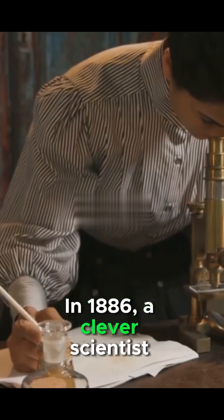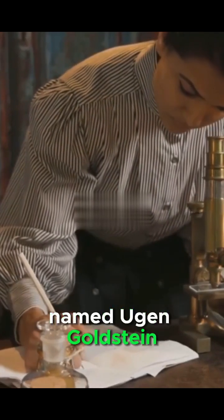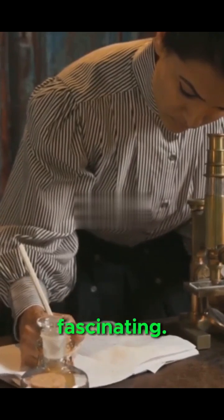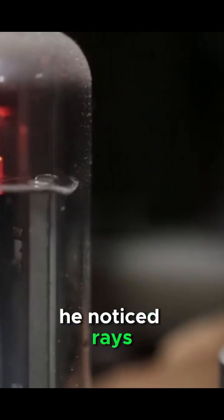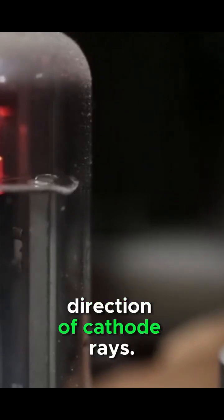In 1886, a clever scientist named Eugen Goldstein stumbled upon something fascinating. While experimenting with vacuum tubes, he noticed rays traveling in the opposite direction of cathode rays.